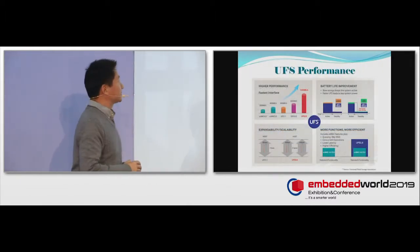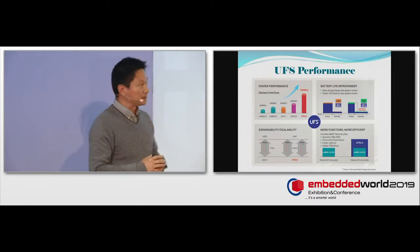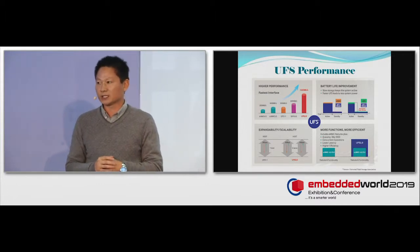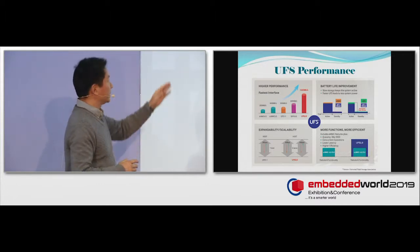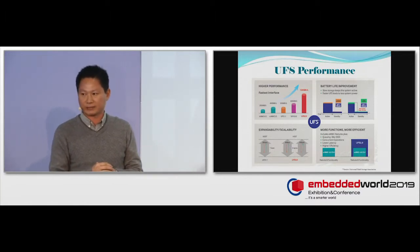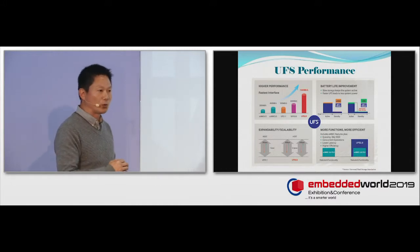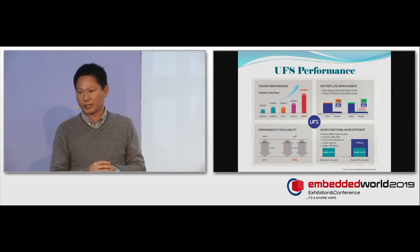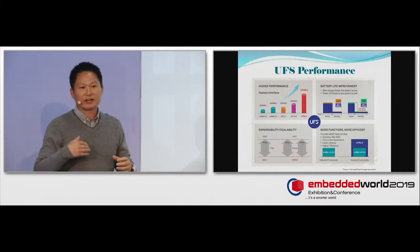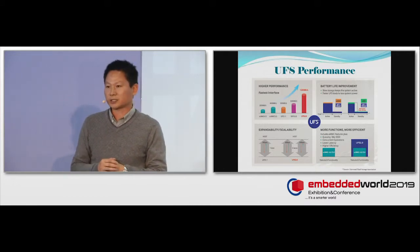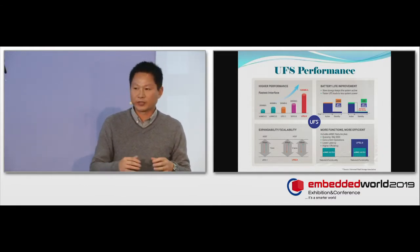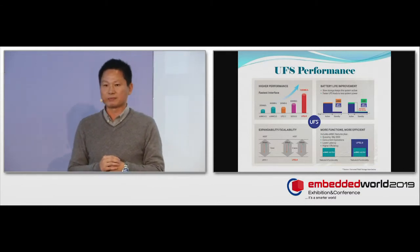From this slide, you can see that UFS speed, UFS 2.0 with two lanes, the performance is 1,200 megabytes per second. It's faster than SATA 3.0, which is 600 megabytes per second. It's faster than EMMC 5.1, which is 400 megabytes per second. UFS offers better power efficiency than SATA and EMMC. UFS has better scalability than EMMC.